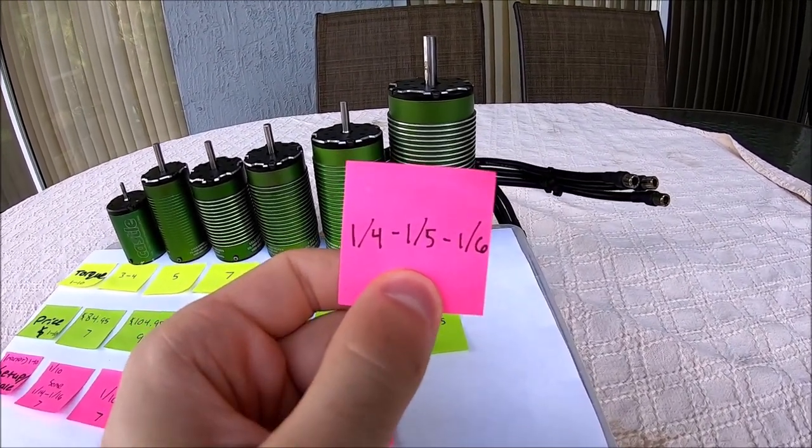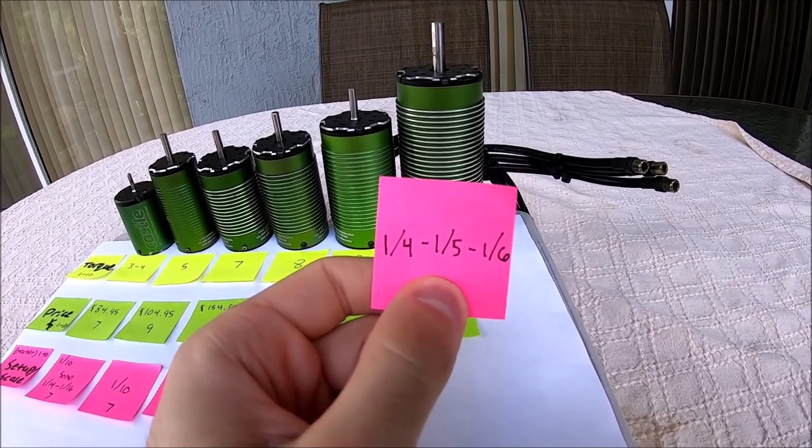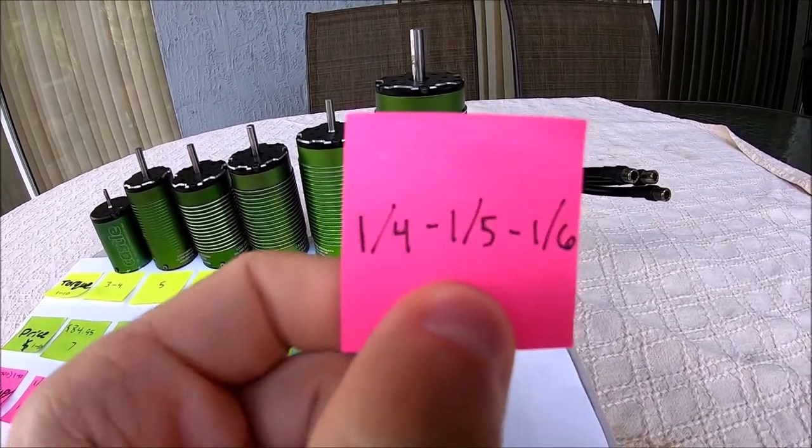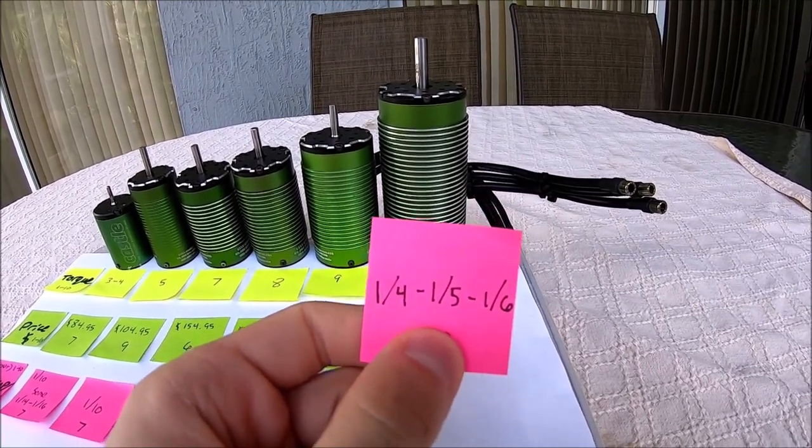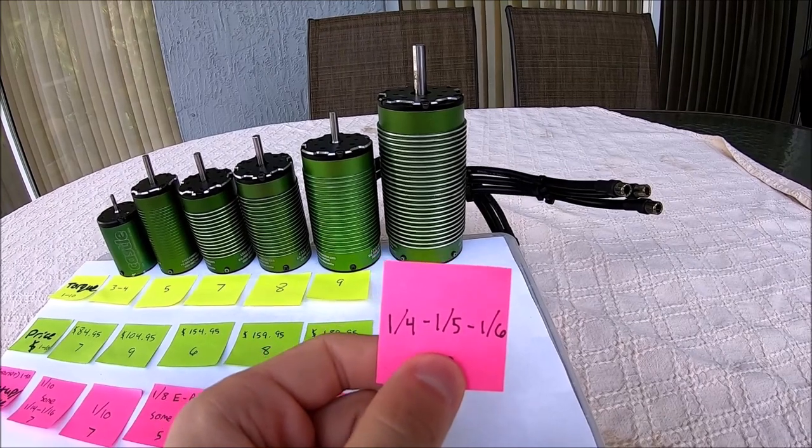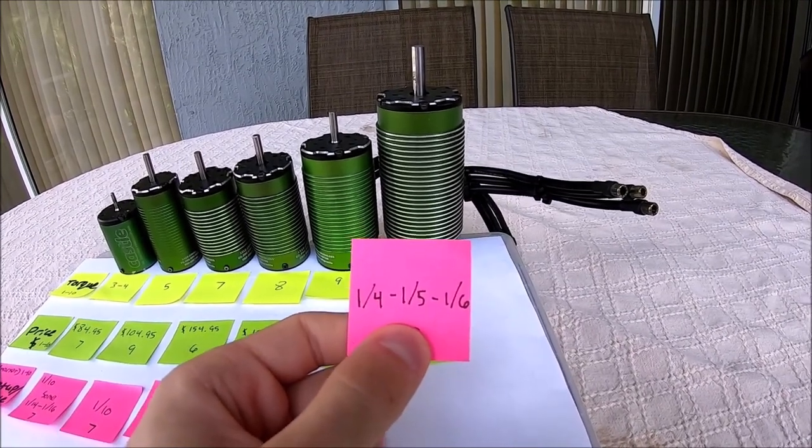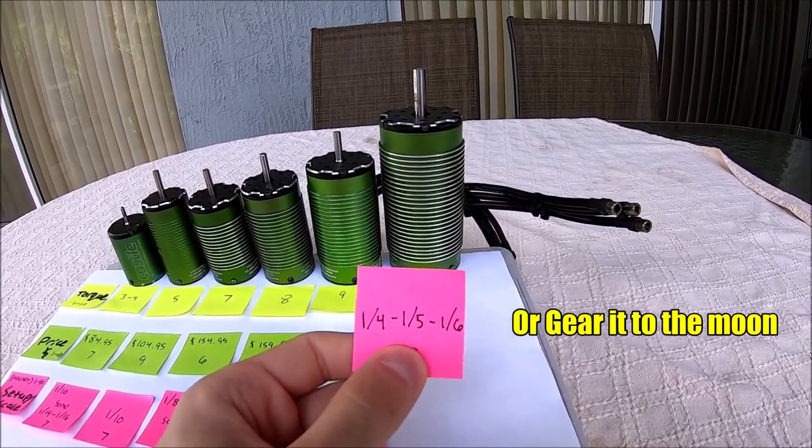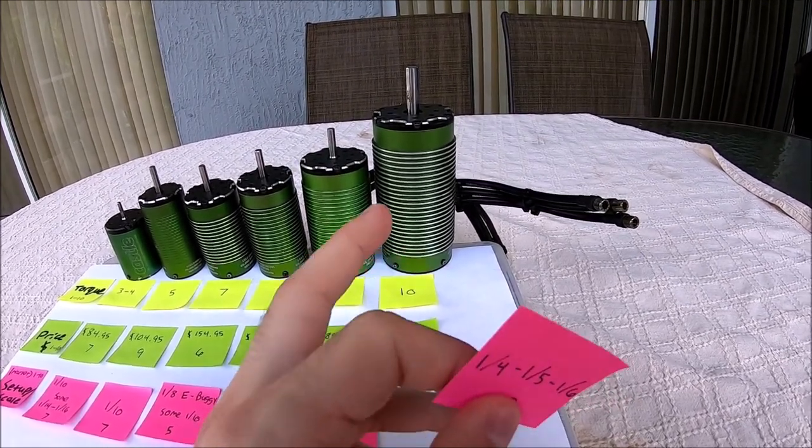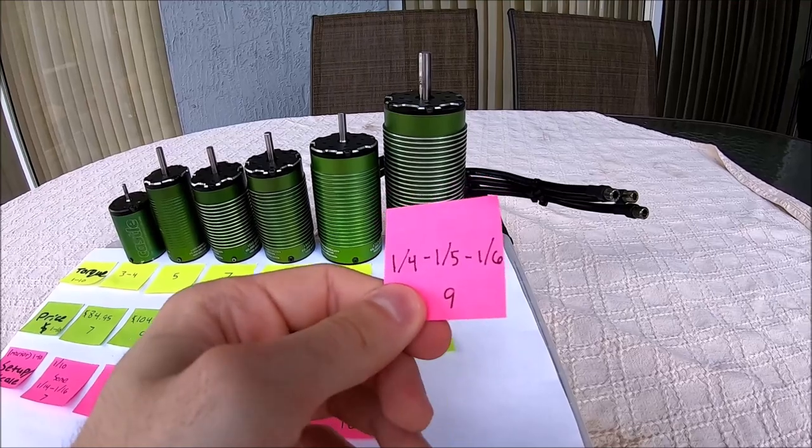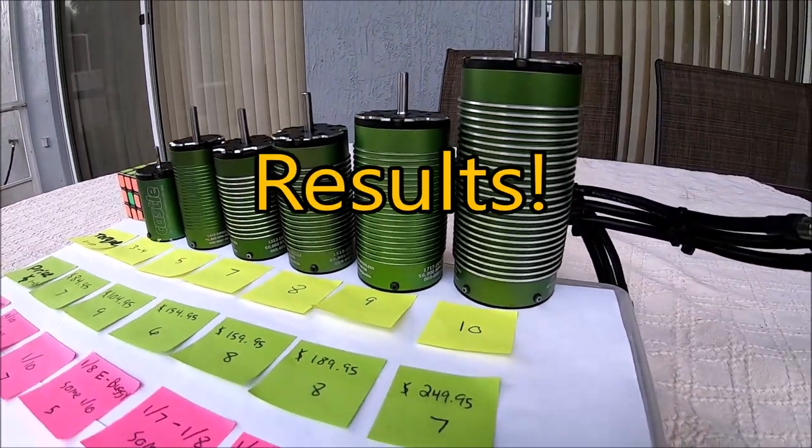Now where the 800 KV will absolutely make up for its price tag is its application. If you want torque, this motor is it, period, end of story. This motor is going to cover our 1/4 scale, 1/5 scale, and 1/6 scale. You could even put it in a 1/7 scale, but it's absolutely not optimal. You're probably going to have to run it on 10 or 12S to even get some kind of RPM out of it, but keep in mind that's not the purpose and application of this motor.